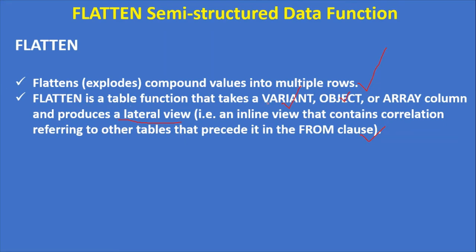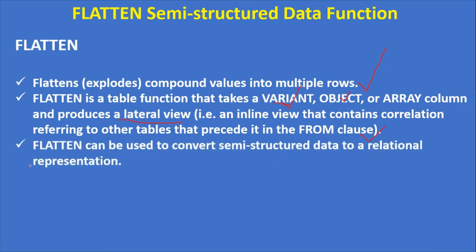The flatten table function takes input as variant, object, or array — these three data types — and produces a lateral view, essentially a subquery or correlation query. Flatten can be used to convert semi-structured data into a relational representation. If you want to convert JSON data into a relational table, first you need to load the JSON file into a table with a variant column, and then by applying the flatten table function you can convert that semi-structured data into a relational table.